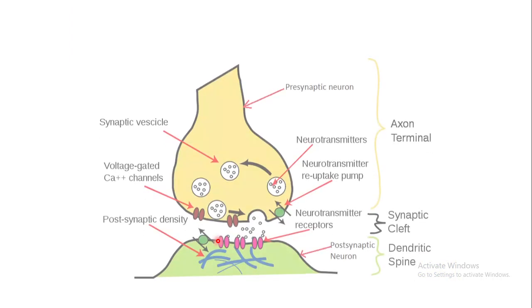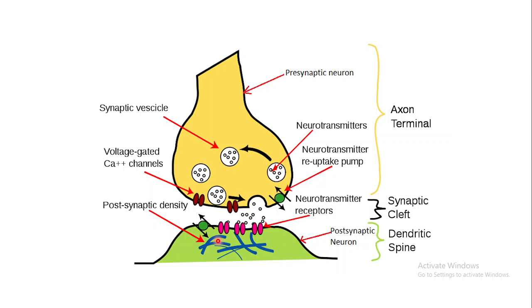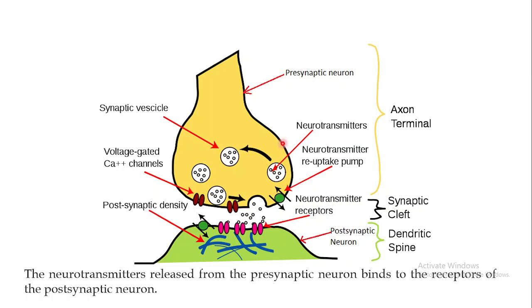Another important example of ligand-gated ion channels involves neurotransmitters. You can see a pathway with a presynaptic neuron on top and a postsynaptic neuron below. When an action potential travels along the axon of the presynaptic neuron and reaches the axon terminals, neurotransmitters are released. Since these neurotransmitters are chemicals, they act as ligands and bind to receptors on the postsynaptic neuron.